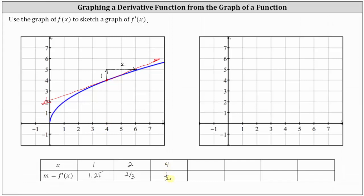Notice that as we move closer and closer to zero, the slopes increase and get larger and larger. Let's sketch the tangent line at x equals one fourth. From the point of tangency, if we move up two units and right one unit, we find another point on the tangent line. The slope of the tangent line at x equals one fourth is equal to two.